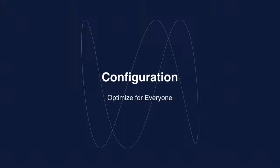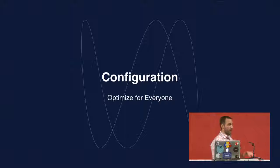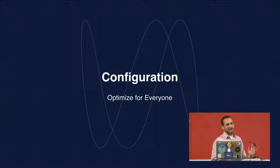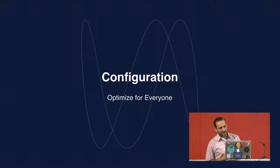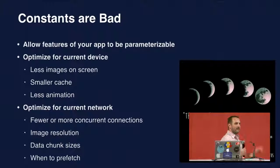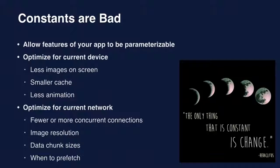My favorite thing — because this is actually the solution to all these problems — is configuration. We build our apps and usually optimize for our own scenario. Then we ship it, someone clicks a different way, and it breaks. Constants are bad. The only thing that is constant is change. So we've allowed most, if not all, of our app's features to have parameters for everything that could be configured. Things that would normally be a static final const in your class are now parameters — still constants, but overridable from the server.